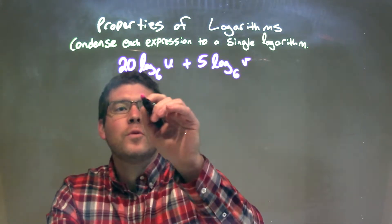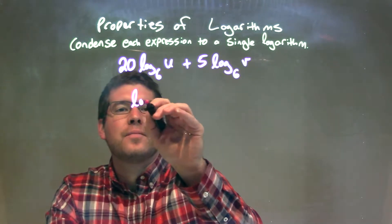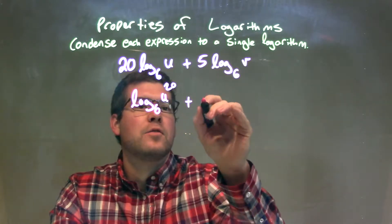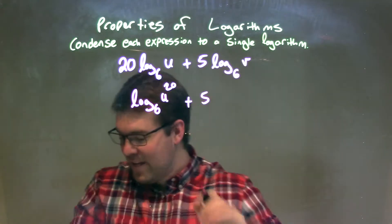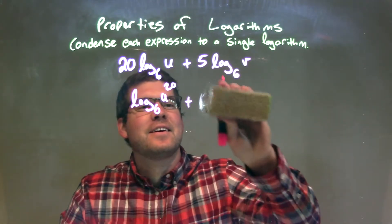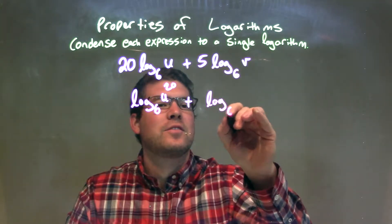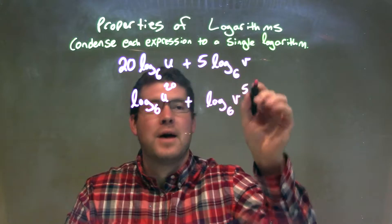So I rewrite this. I can write it as log base 6 of u to the 20th power, plus log base 6 of v to the 5th power.